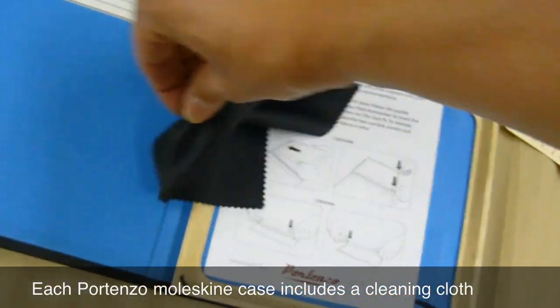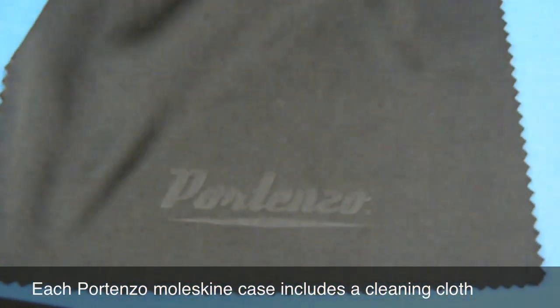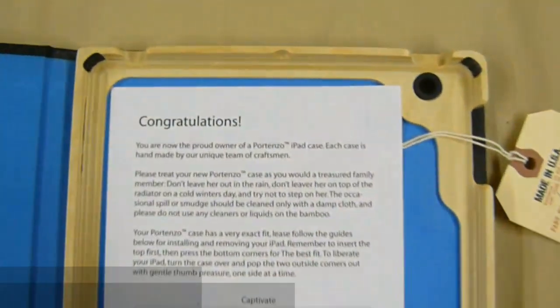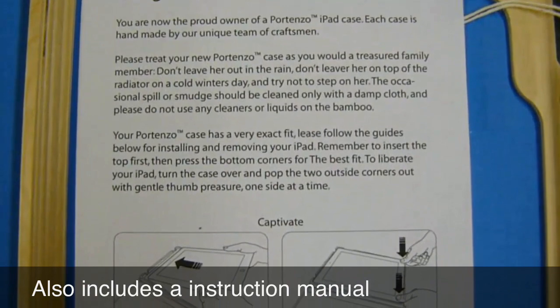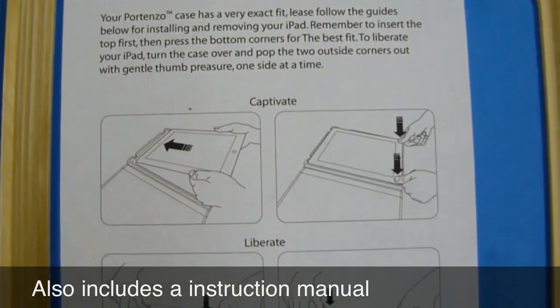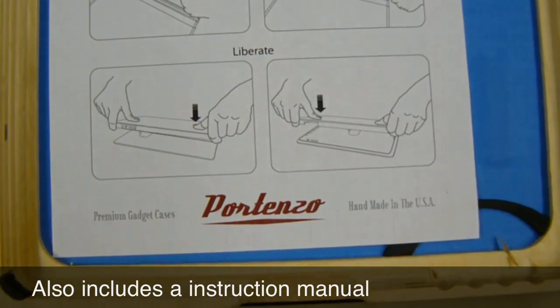Each Portenzo case comes with a cleaning cloth, which is kind of cool that they include that. Of course it's Portenzo marked. It also comes with an instruction manual and you can also download this from their website. I've seen it on there as a PDF. It just shows you how to insert your iPad and remove it and gives a little bit of story.